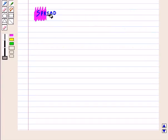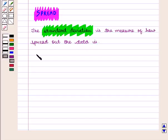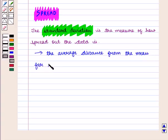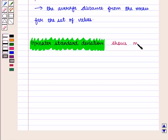Now we shall discuss the spread. The standard deviation is the measure of how spread out the data is. It indicates the average distance from the mean for the set of values. Greater standard deviation shows more distance from the mean.